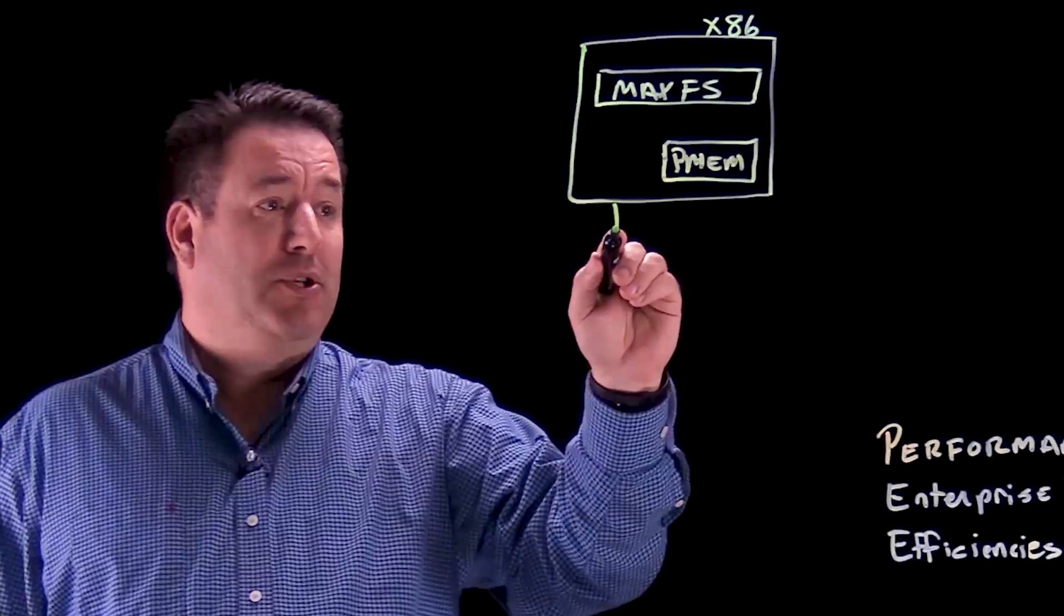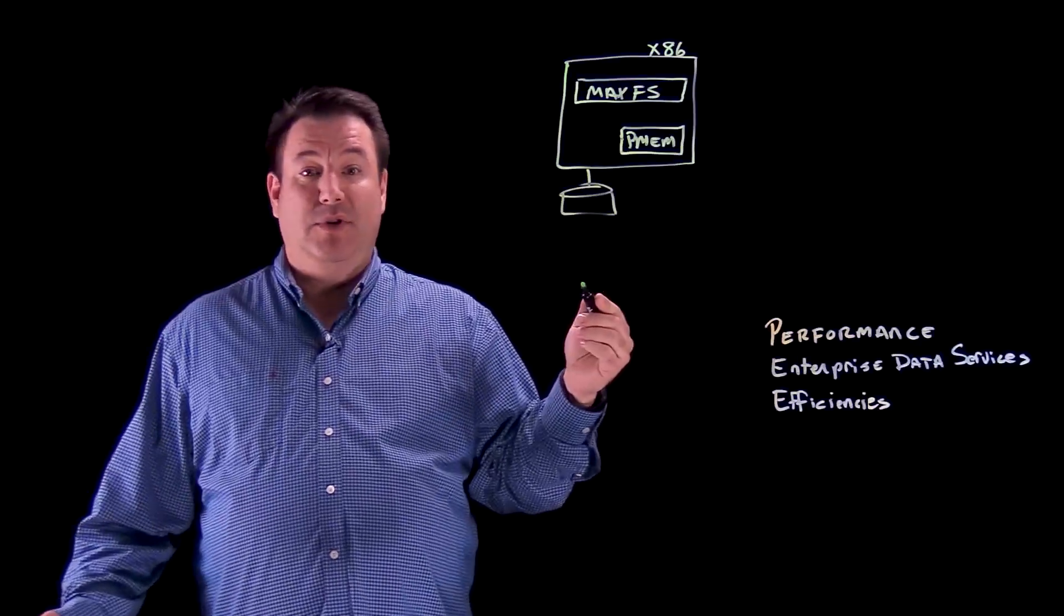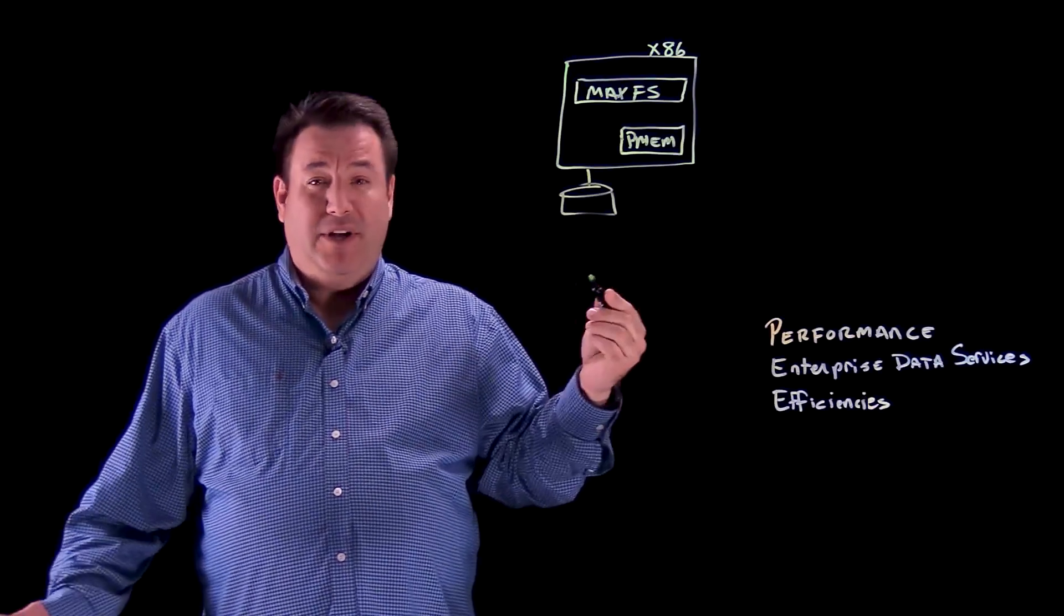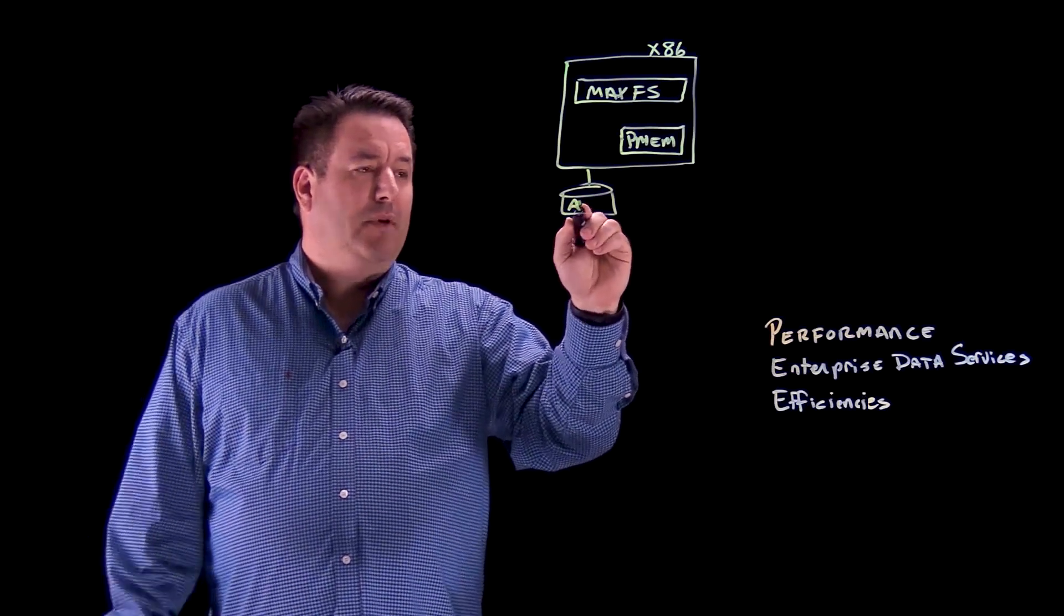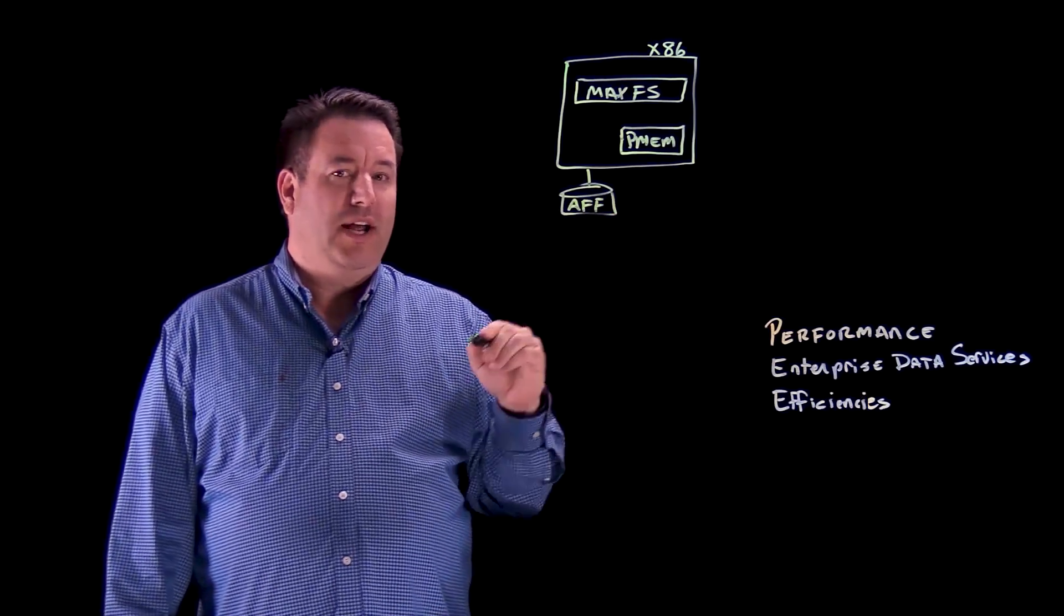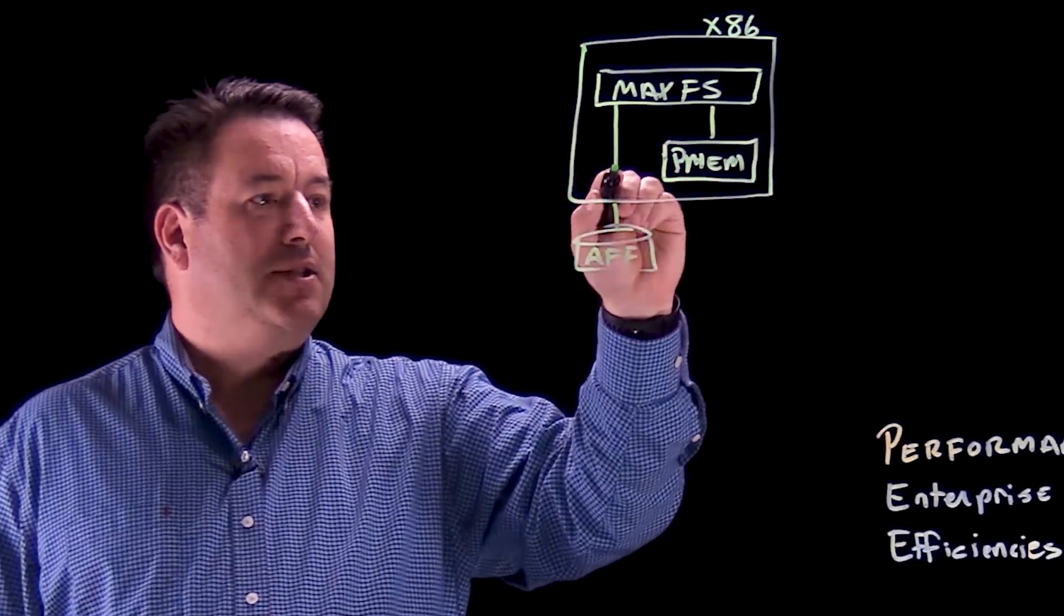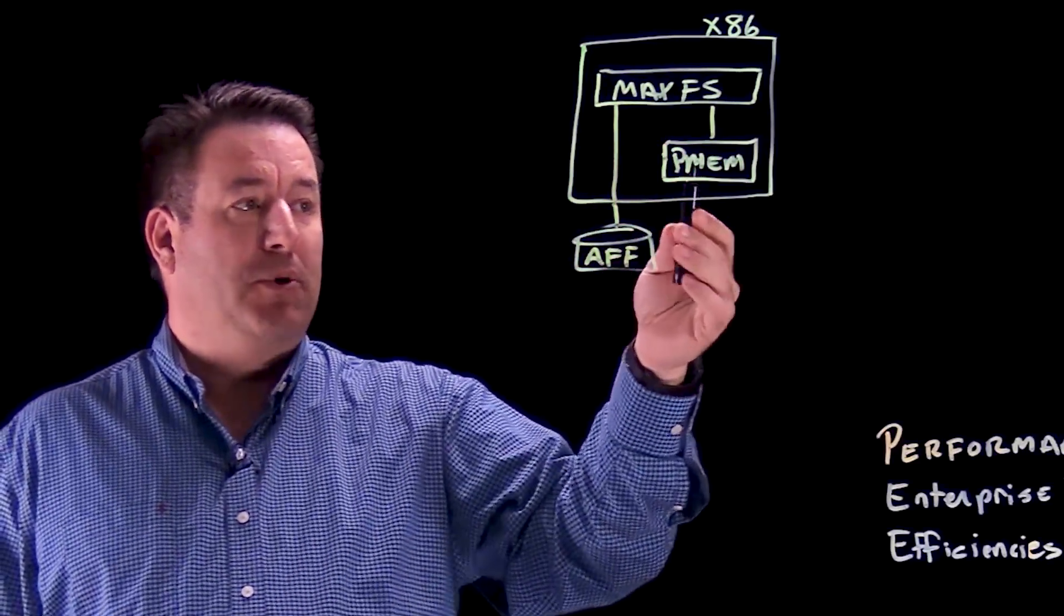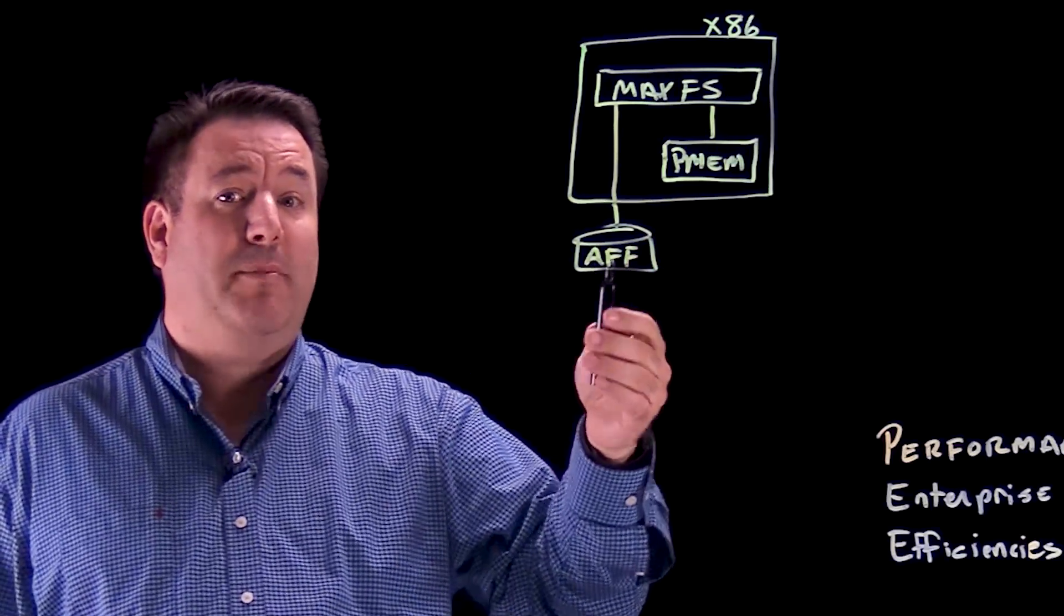Also, MaxFS allows us to be able to use a capacity tier. We all know that persistent memory is fast. It's on the CPU bus, it's on the memory bus, it's very, very fast compared to any shared or attached storage, including fiber channel and NVMe over fiber channel. So this file system is comprised of these two components, a persistent memory tier for the performance, and a storage tier for the capacity.